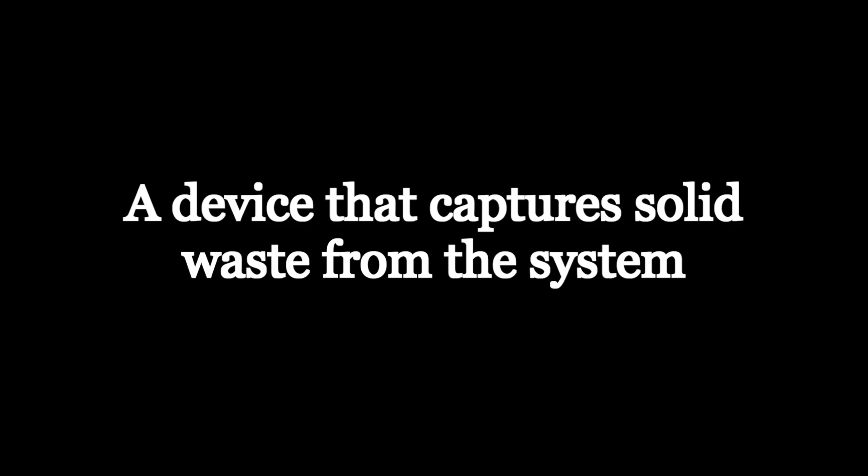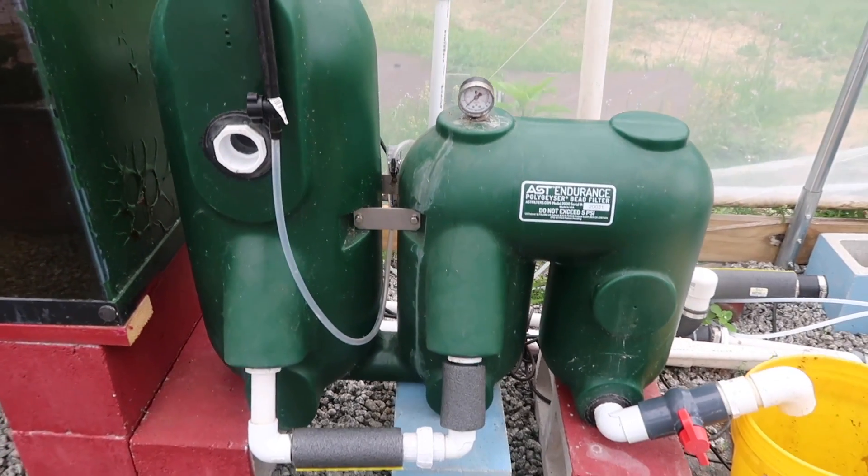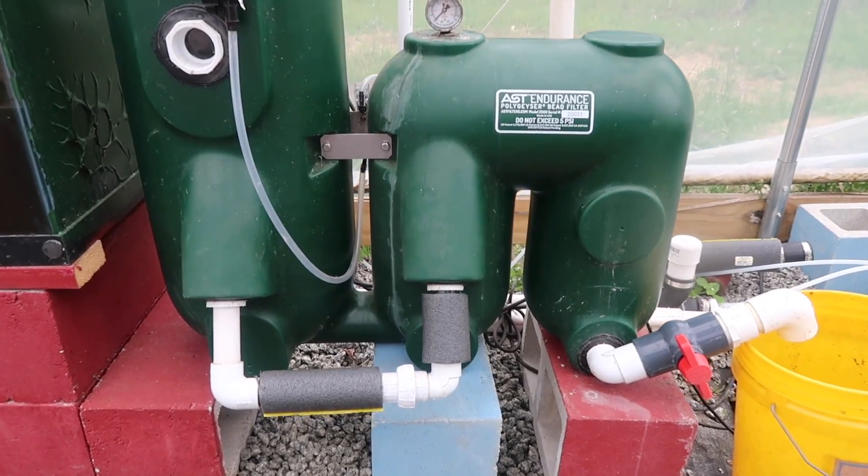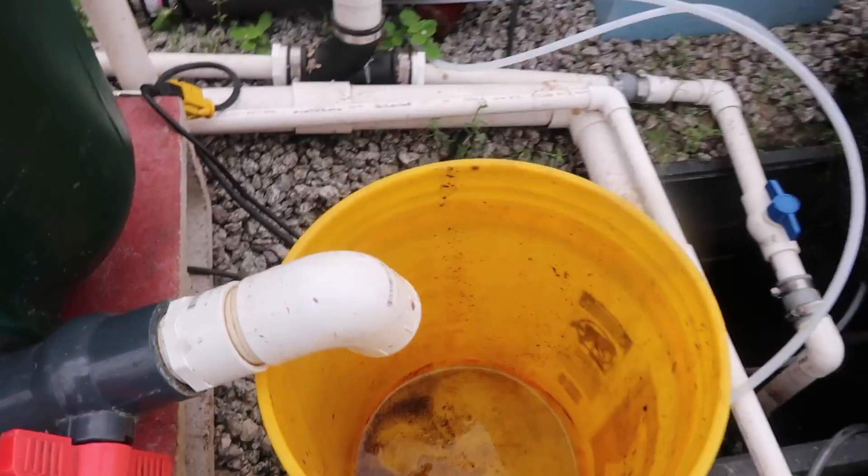The solids filter is defined as a device that captures solid waste from the system. It basically captures solids, removes them, prevents them from recirculating throughout the system, and contains them until they're processed further. Types of solids filters include a drum filter, a bead filter, a radial flow filter, and a swirl separator — those are pretty much the main solids filters used in aquaponics.